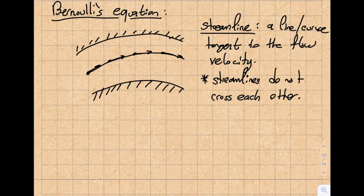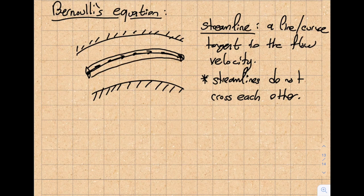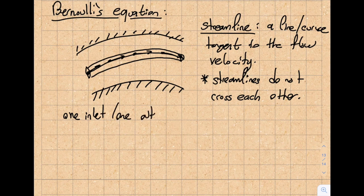This is a useful terminology we use in analysis. Now I'm going to pick the control volume to be right around a single streamline. Before, I was considering the entire large band; now I'm going to focus on this small cylinder-like shape around the streamline. Since I'm picking one streamline, I have one inlet and one outlet — there are no exits from the sides because streamlines do not cross each other.